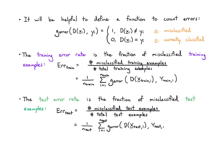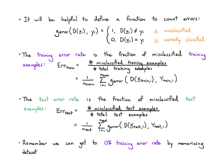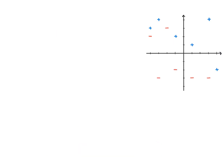We can always get zero percent training error by memorizing, or equivalently by using a very complex decision rule, but this may not give us low test error rate. We can always just memorize the training data, but that doesn't always work very well, as we'll see.